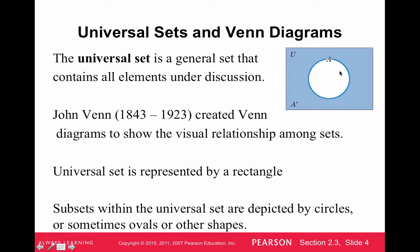What we see here is set A being represented by the circle, and then A' which means 'not A,' the complement of A. Within this universal set, we could say the universal set is residents of Colorado, A is the set of Community College of Denver students, and A complement would be people who live in Colorado that aren't Community College of Denver students.